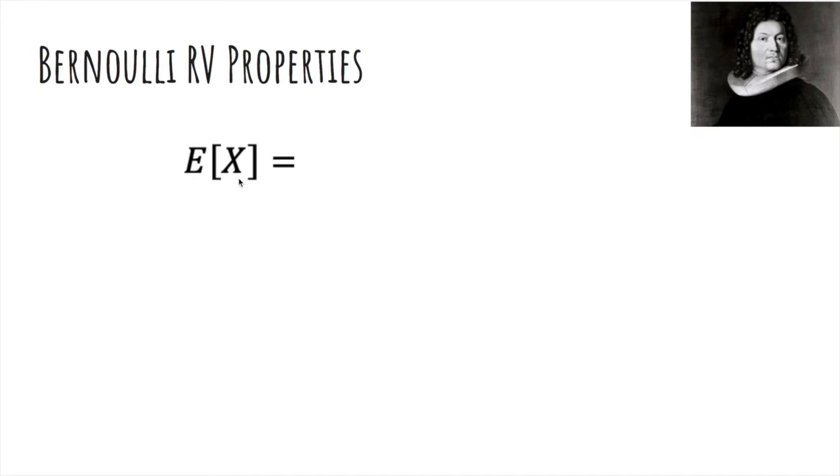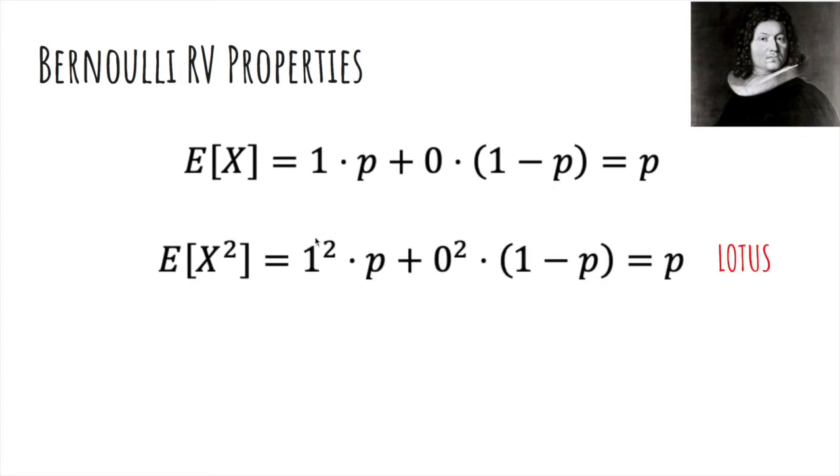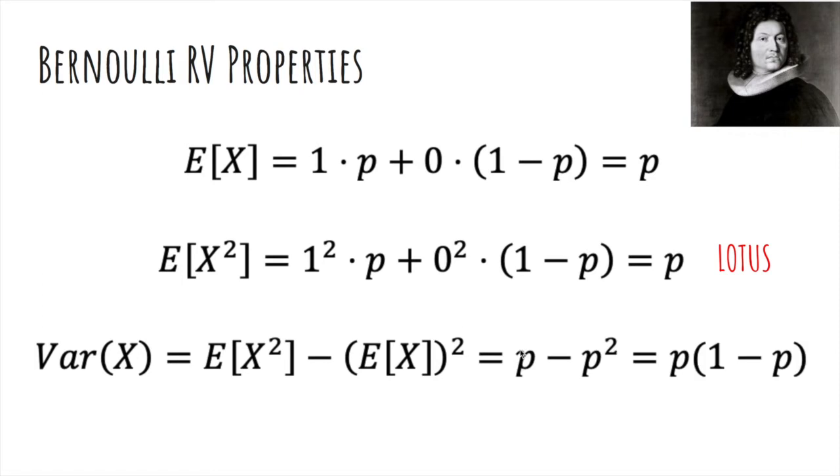The expected value of X is 1 times p plus 0 times 1 minus p, because it can only take on the values 1 or 0, and 1 with probability p, 0 with probability 1 minus p. The expected value of X squared by LOTUS, remember we can just square the values, but not the probabilities, and then we add them, and we actually get p, because 1 squared is 1 and 0 squared is 0. The variance of X is this formula, which we showed earlier, and you can do the math, and you'll get p times 1 minus p.